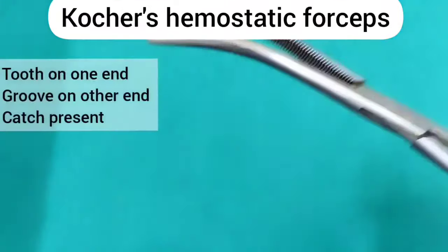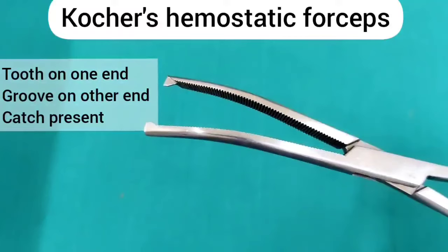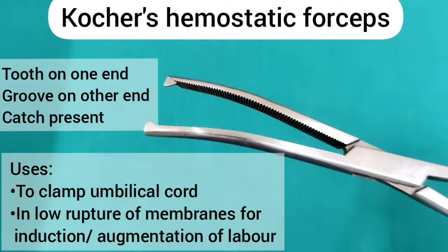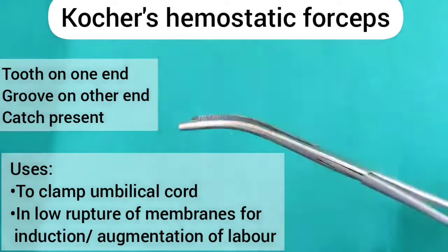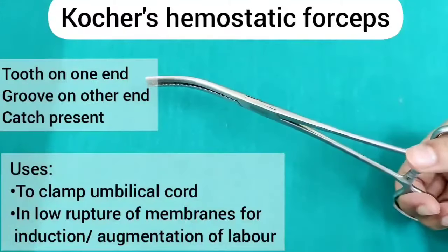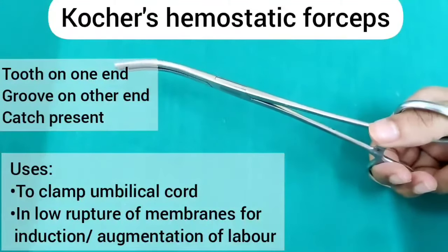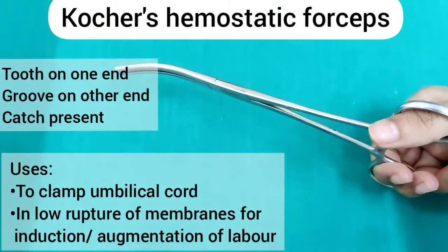As you can see, it has a tooth on one end and a groove on the other end. It has a catch. It is used to clamp the umbilical cord and in lower rupture of membranes for induction or augmentation of labor.